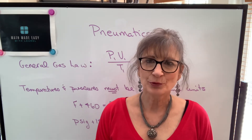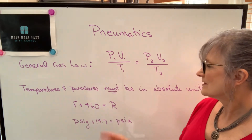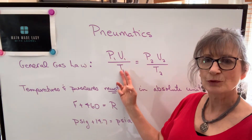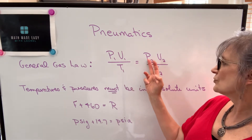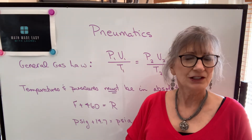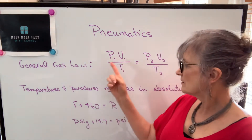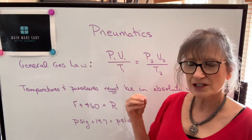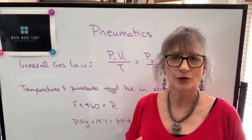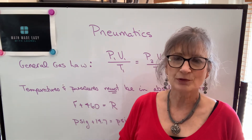We're going to start off by talking about the general gas law, which states pressure one times volume one divided by temperature one will equal pressure two times volume two divided by temperature two. It looks a little bit intimidating, but these numbers are just identifying numbers — they're not powers. They don't have any numerical value other than to identify which pressure, volume, or temperature.